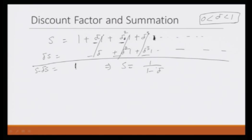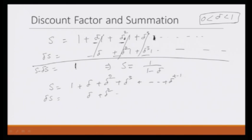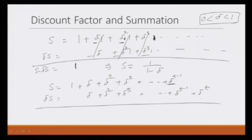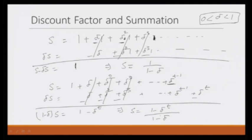But if we have only t periods, then we have 1 plus delta plus delta squared plus delta cubed and then delta to the power t minus 1. You take delta S, and with the same logic you get delta plus delta squared plus delta cubed, and delta to the power t minus 1 times delta gives delta to the power t. Taking the subtraction, you get 1 minus delta multiplied by S, and all the middle terms cancel, leaving 1 minus delta to the power t. So in this case the summation would be equal to (1 minus delta to the power t) divided by (1 minus delta).